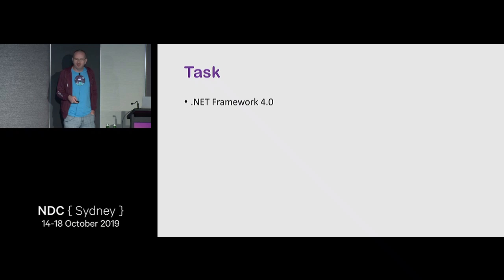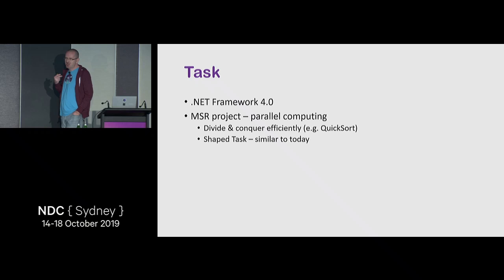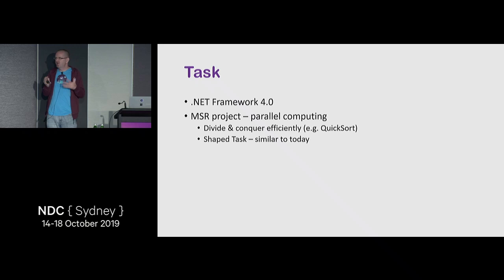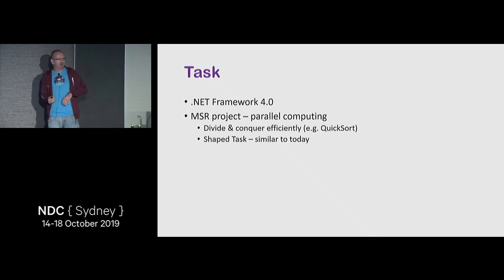Then Task came around in .NET Framework 4.0. Interestingly it was created as part of Microsoft Research and was strictly about parallel computing — nothing to do with I/O originally. It was really for divide-and-conquer, like QuickSort: make a pivot, sort left side, sort right side recursively, then merge results.